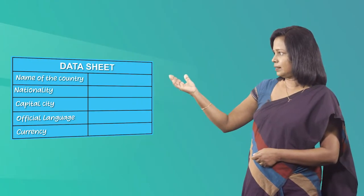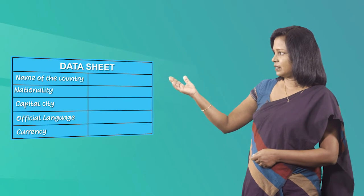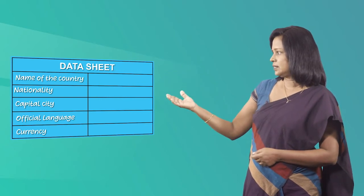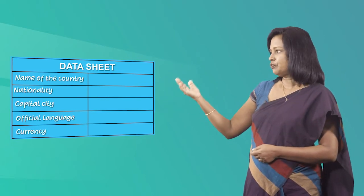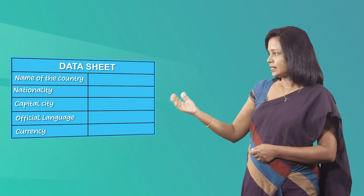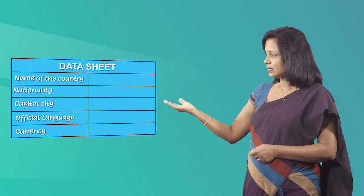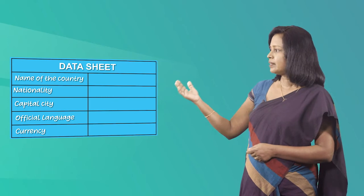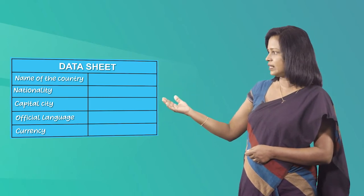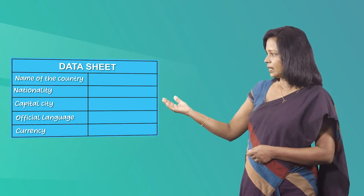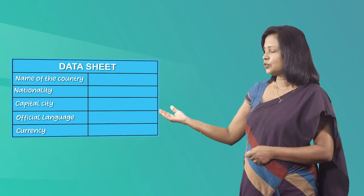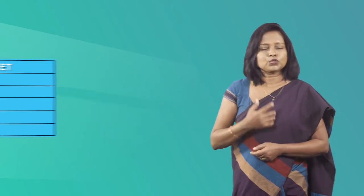First you have to find the name of the country and then the nationality of the people. Next you have to find the capital city of this country, then the official language, as well as the currency used in that country. So what you have to do is pause the video, go back to the presentation script, read it and fill in the information.